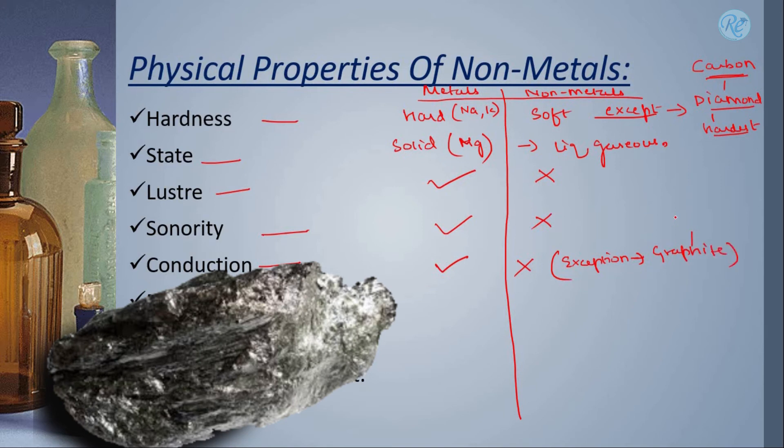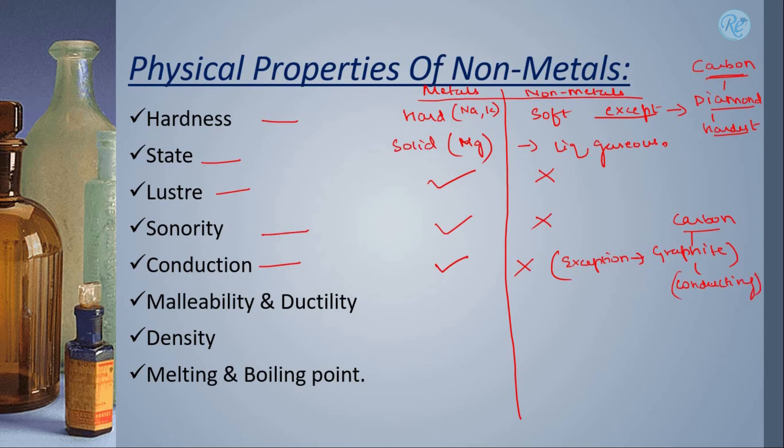Graphite, again, which is one of the allotrope of carbon, which is a non-metal, is conducting in nature. While other non-metals are non-conducting in nature.